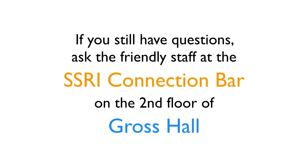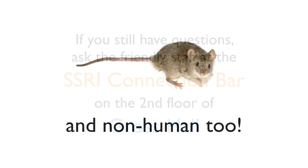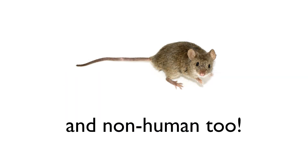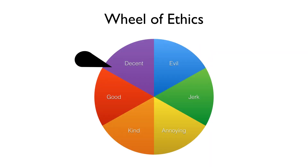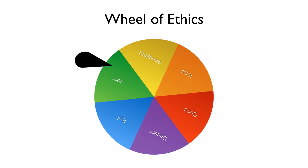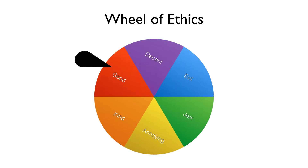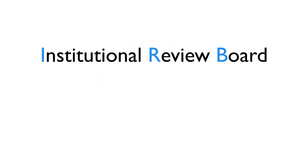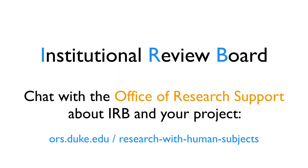If you'd like to double-check any of these, the friendly staff at the Connection Bar of Duke's Social Sciences Research Institute can help you meet as many goals of good survey design as possible. With all research involving human subjects, you need to make sure that your work is being done in an ethical way that protects the privacy of your participants. Luckily, you don't need to reinvent the wheel of ethics because Duke provides a lot of help for following good ethics guidelines, known commonly as IRB for the Institutional Review Board.